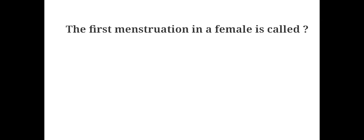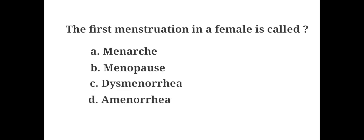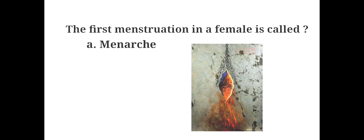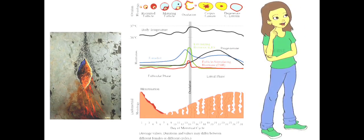The first menstruation in a female is called: A. Menarche, B. Menopause, C. Dysmenorrhea, D. Amenorrhea. The answer is A. Menarche. Menarche is the first menstrual cycle or the first menstrual bleeding in female humans.